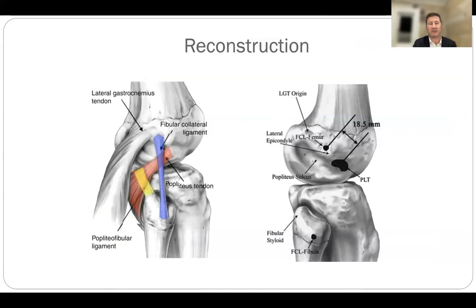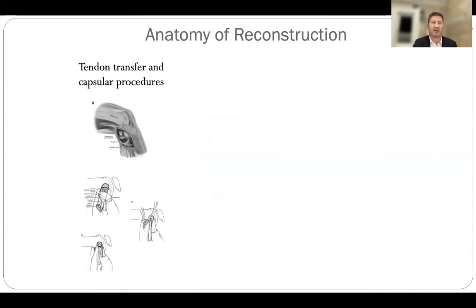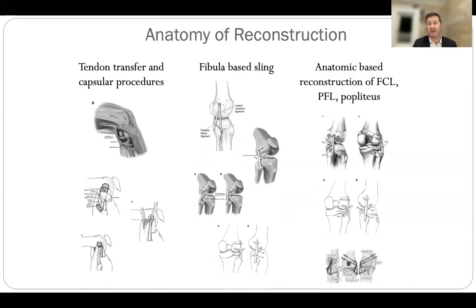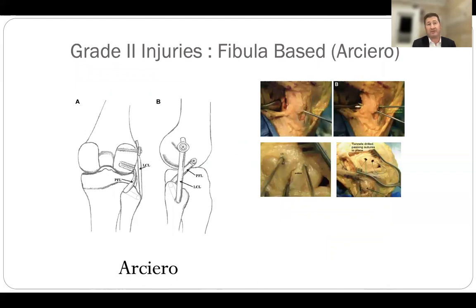Reconstructions focus on reconstructing the significant anatomy: the lateral collateral ligament, the popliteofibular ligament, and the popliteus. There are multiple techniques from tendon transfers and capsular procedures to fibula-based slings through to anatomical tibia- and fibula-based reconstructions. For grade 2 injuries I do a fibula-based or Arciero-type technique with two tunnels in the femur based on the anatomy LaPrade described, and a single anterolateral to posteromedial oblique tunnel on the fibula to reconstruct the LCL and a combined version of the popliteus and popliteofibular ligament.